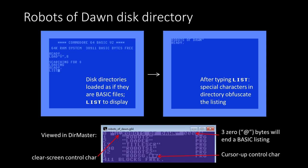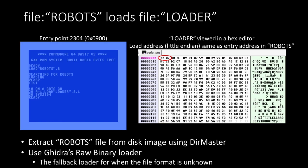Our ground truth is going to be this modern Windows tool. We can take those files and drag them out onto the file system and directly into Ghidra. Looking at the very first file, it just loads the second file, so we're going to ignore the first. The second file is called 'loader,' and we can see 'SYS' means start execution at 2304, which is hex 0x900 — that's the entry point. Opening the file in a hex editor, the first two bytes are 0x00 and 0x09 — little-endian, meaning its load address into memory is hex 0x900.